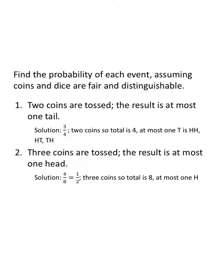Find the probability of each event assuming coins and dice are fair and distinguishable. Two coins are tossed. When two coins are tossed we have heads heads, heads tails, tails heads, and tails tails. That's our sample space.